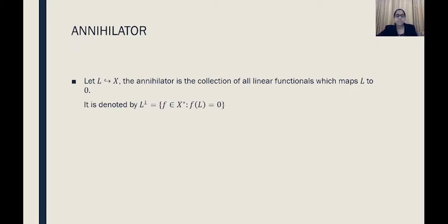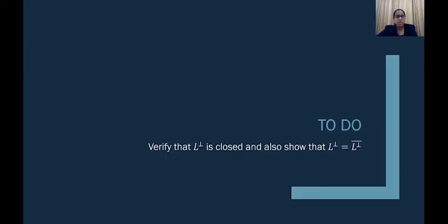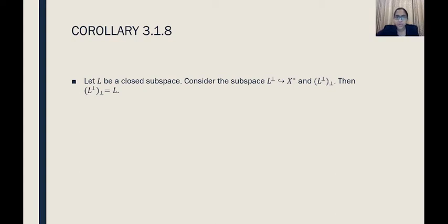So just remember: the annihilator is the set of all functionals which maps the given subspace to zero. You can easily verify that it is closed, and we can also show that L-orthogonal equals the closure of L-orthogonal. Once we prove L-orthogonal is closed, that second statement follows trivially. You can try that out by yourself. Now let's move on to Corollary 3.1.8.